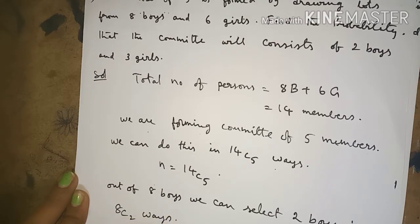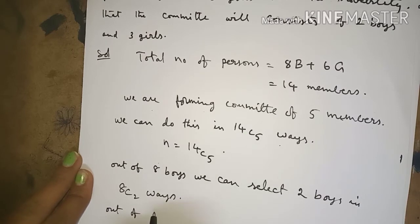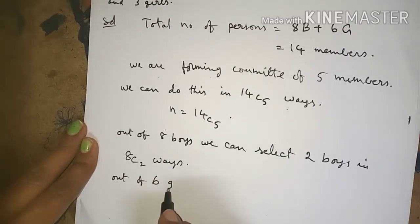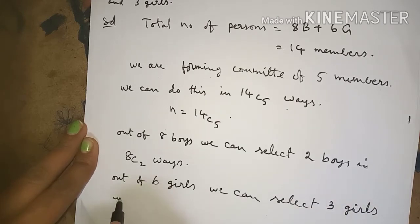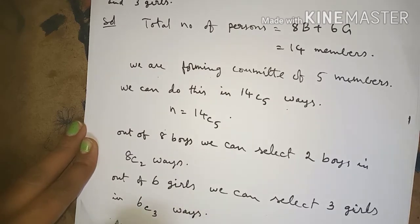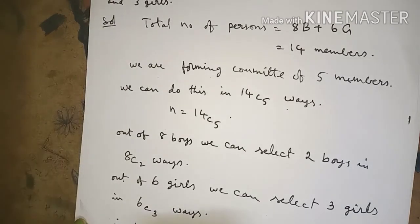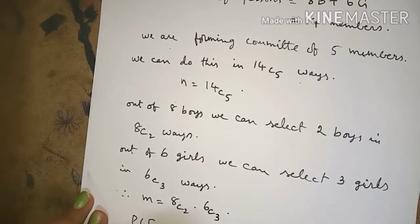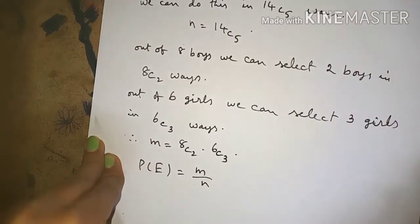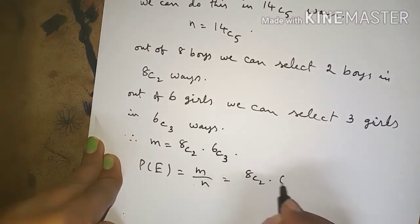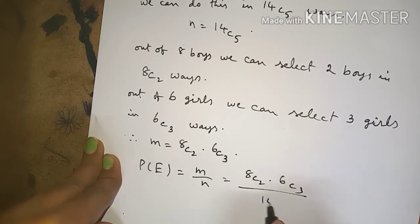Out of six girls, we can select three girls in 6C3 ways. Therefore, m (the numerator) is equal to 8C2 multiplied by 6C3. The probability P(E) is equal to m by n, so P(E) equals 8C2 into 6C3, divided by 14C5.